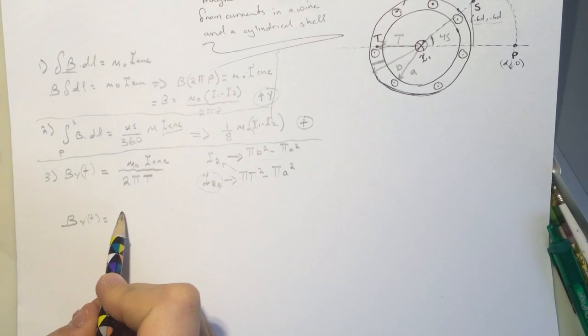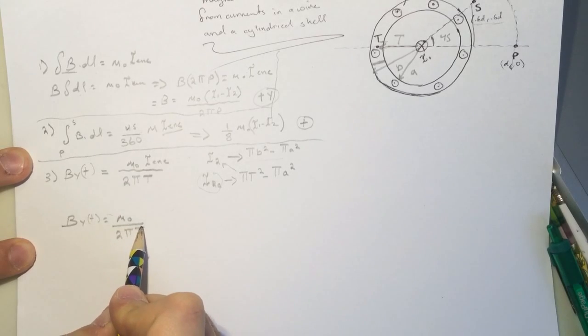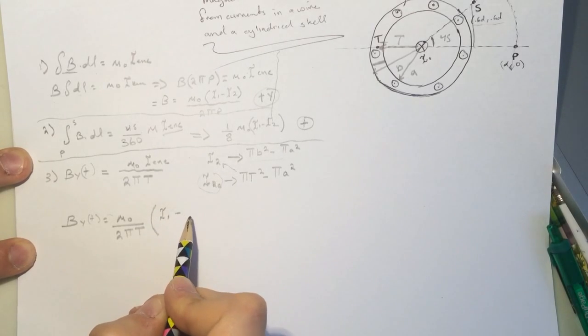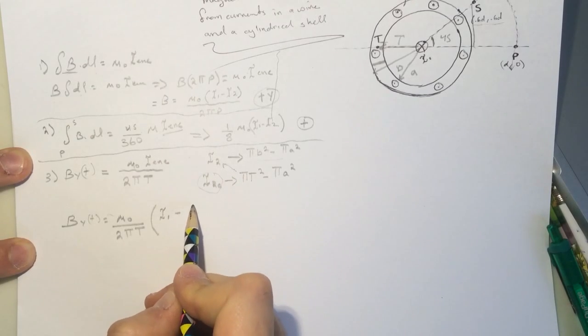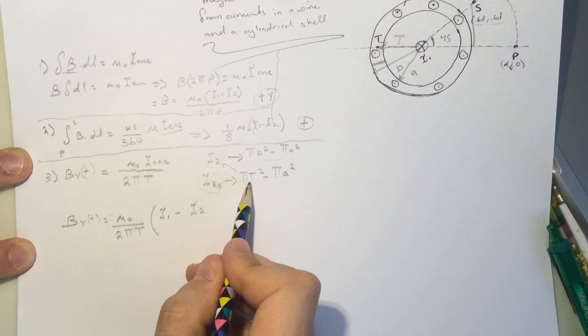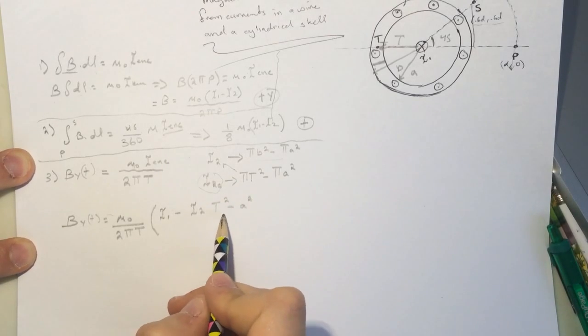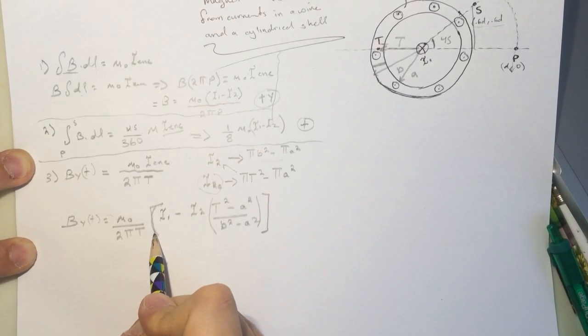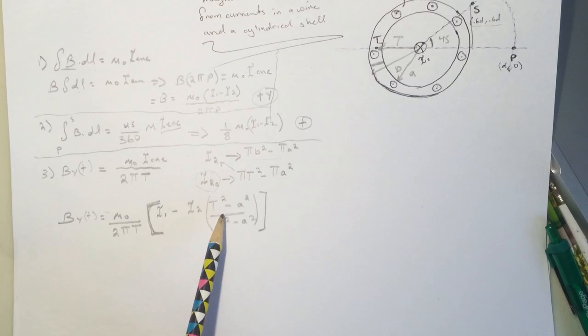By at T will be equal to mu naught, and then the I enclosed will be I1 minus the other guy, which is I2 times this guy. And we can now drop the pi's, so it's t squared minus a squared divided by b squared minus a squared. So this was the only hard part in question number three.